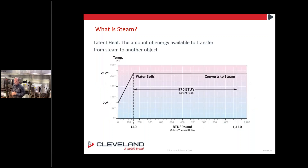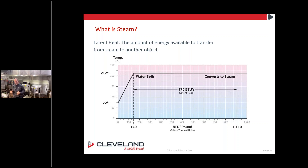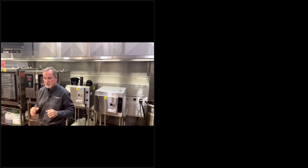From room temperature — 72 degrees — to a boil takes 140 BTUs of energy. However, to change state from water into steam takes another 970 BTUs of energy. So steam now has over a thousand BTUs of energy in it. That gives you an idea of how much energy steam carries.